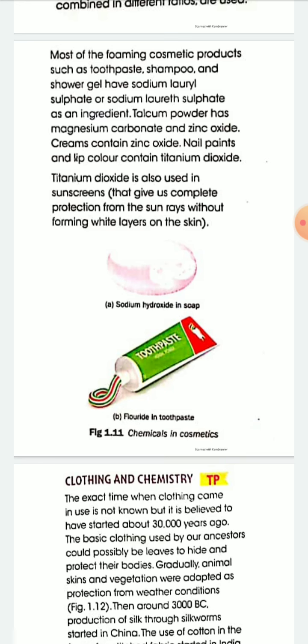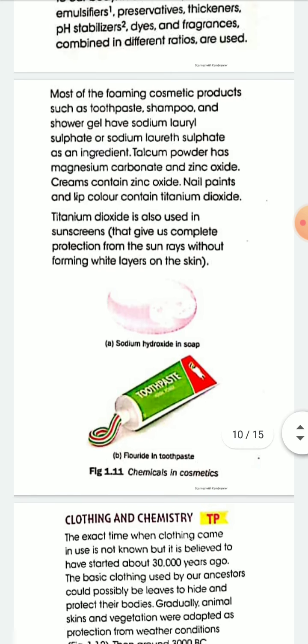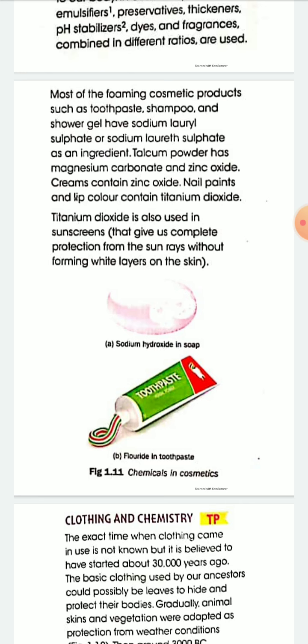Most foaming cosmetic products such as toothpaste, shampoo, and shower gel have sodium lauryl sulfate as an ingredient. Talcum powder has magnesium carbonate and zinc oxide. Cream contains zinc oxide. Nail paints and lip color contain titanium dioxide. These are the compositions of different types of cosmetics.